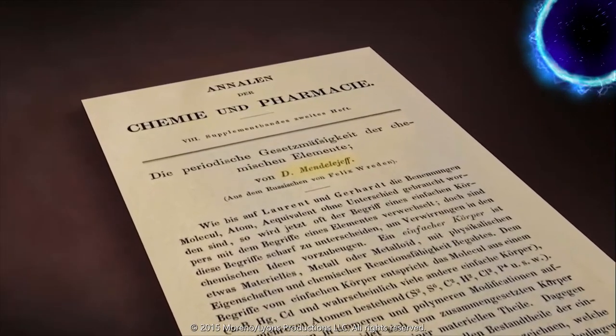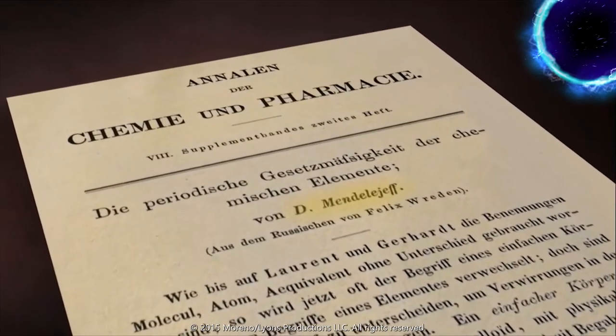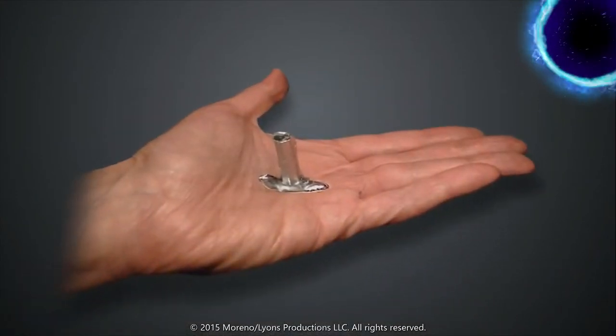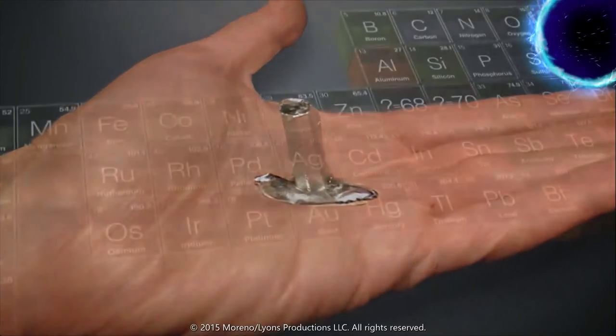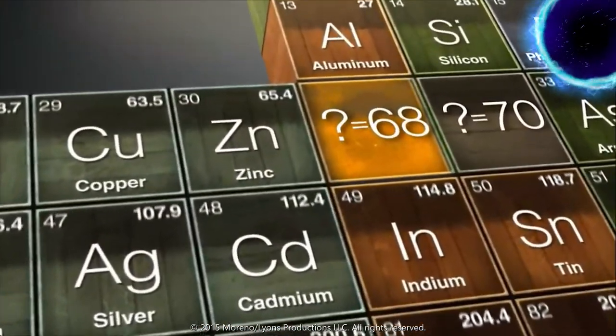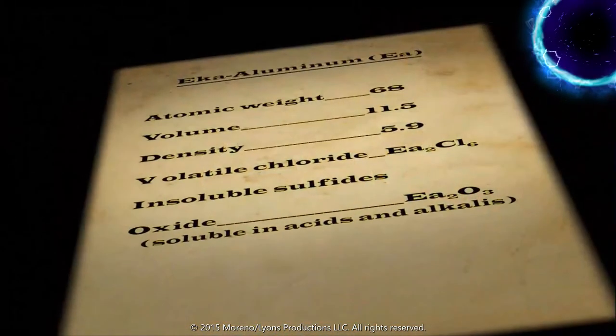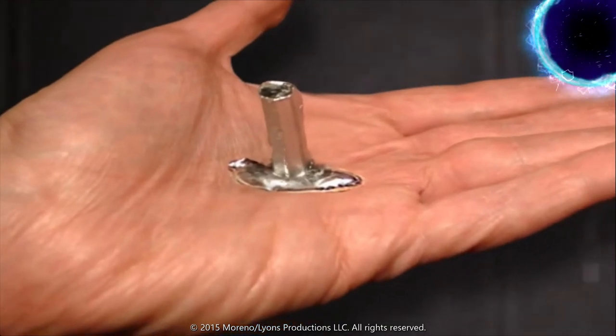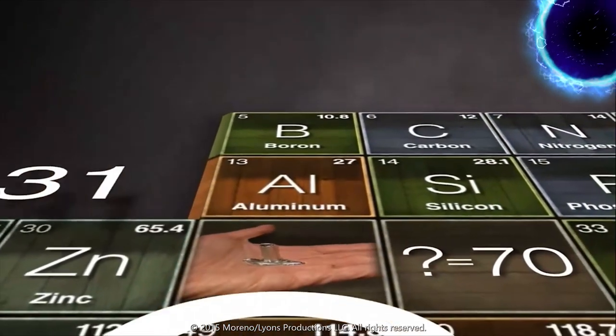In 1871, Mendeleev published an article making predictions about three missing elements for which he'd left room in the table, stating: 'The periodic law allows us not only to predict what new element will be found, but also to determine in advance their chemical and physical properties.' Chemists weren't used to making predictions to that degree of specificity. Four years later, a French chemist found a new metal so soft it melted in his hand — he called it gallium. It seemed a good fit for the empty spot below aluminum, but the density didn't match Mendeleev's prediction. Mendeleev wrote to the Frenchman suggesting he check his data — and sure enough, when the French scientist rechecked his measurements, Mendeleev was correct. Not only had Mendeleev predicted the element, but he knew its properties better than the discoverer himself.